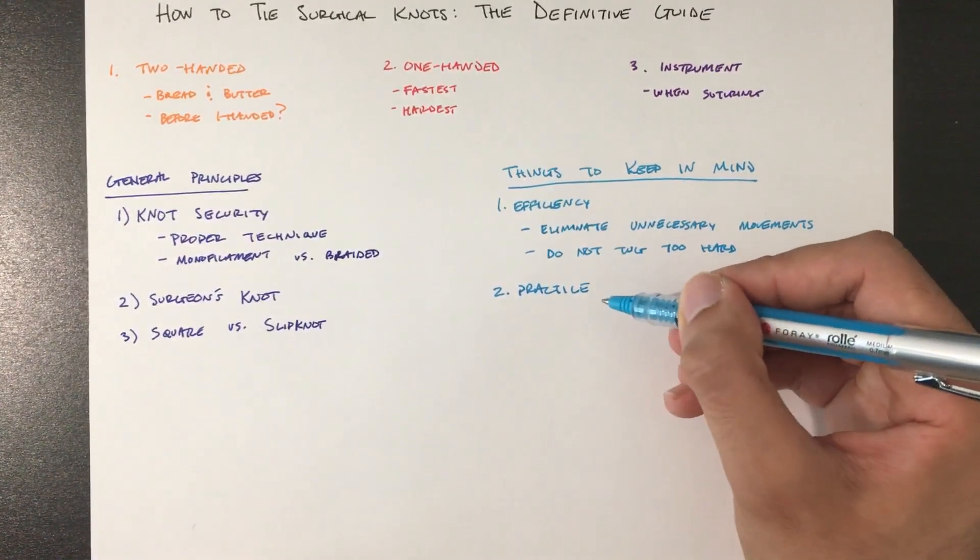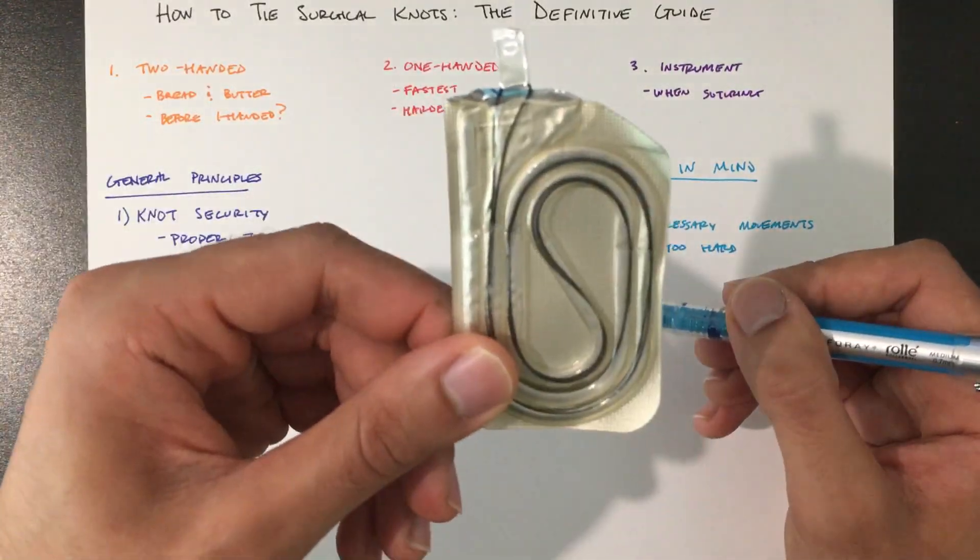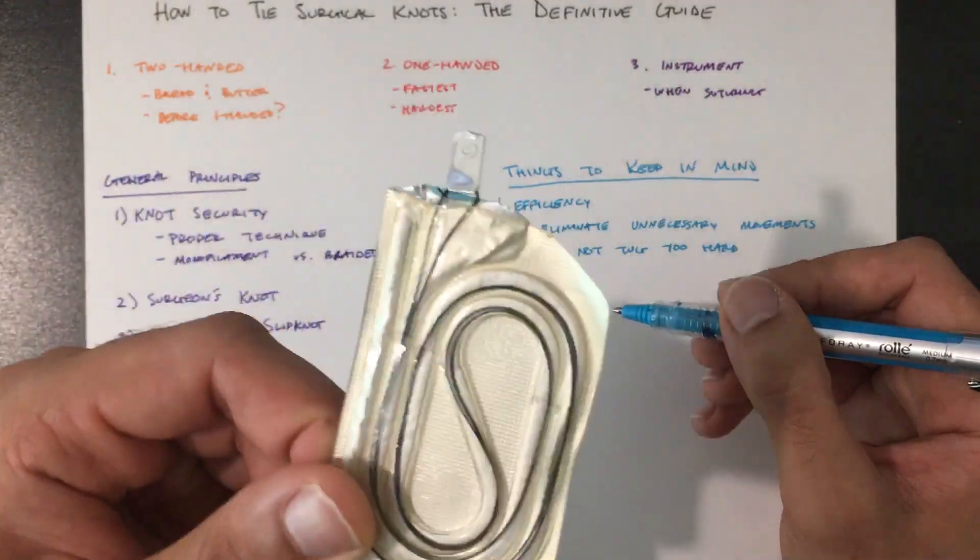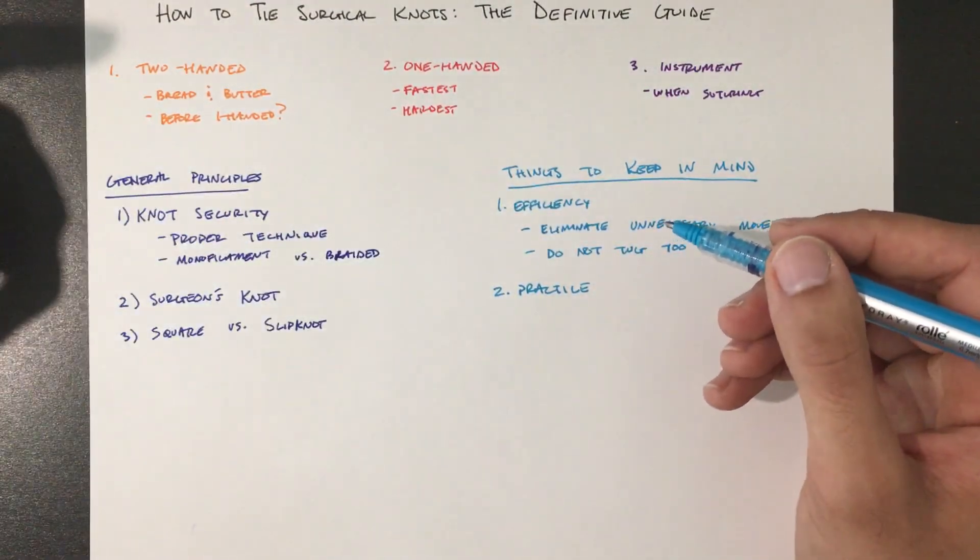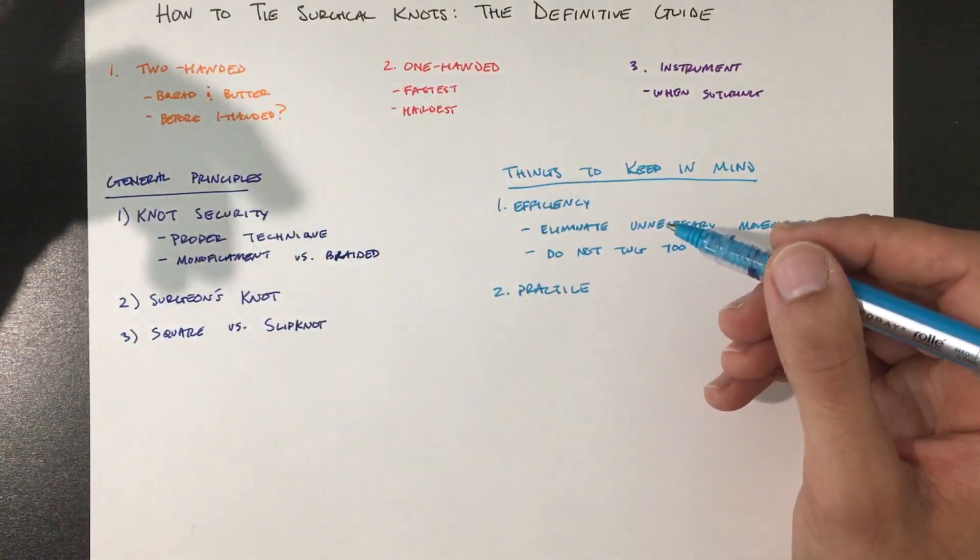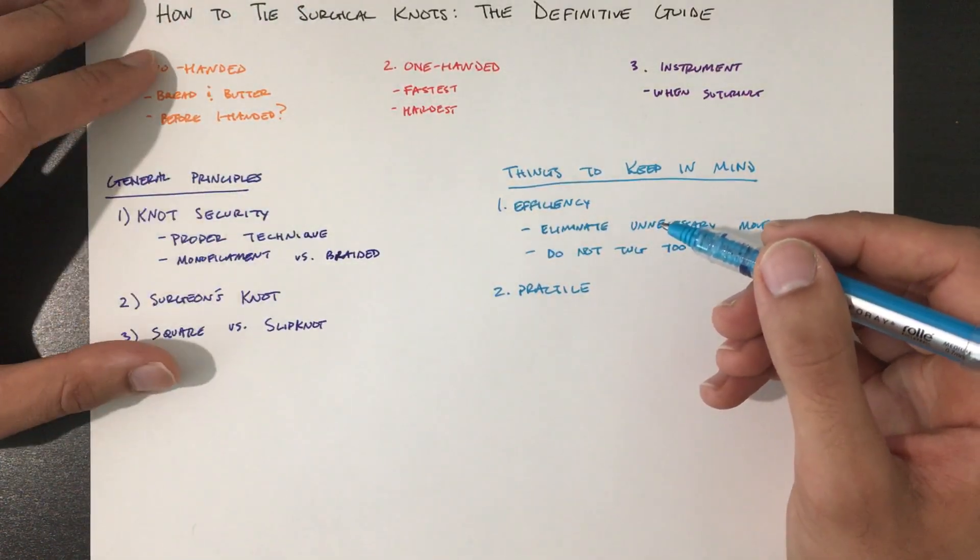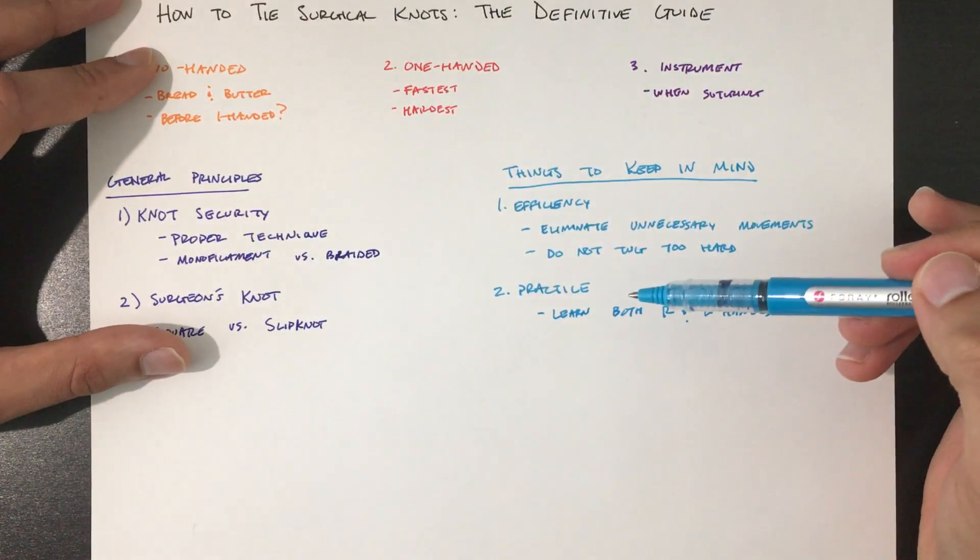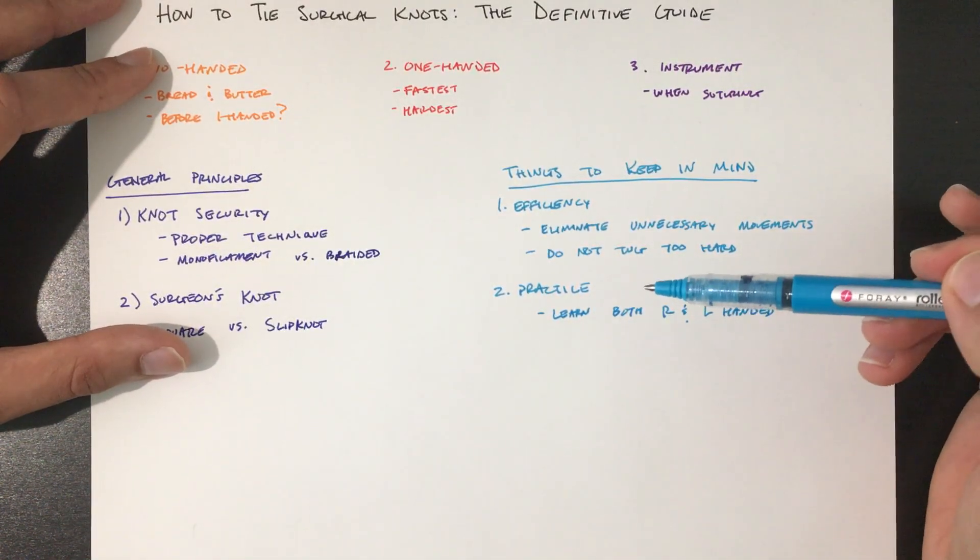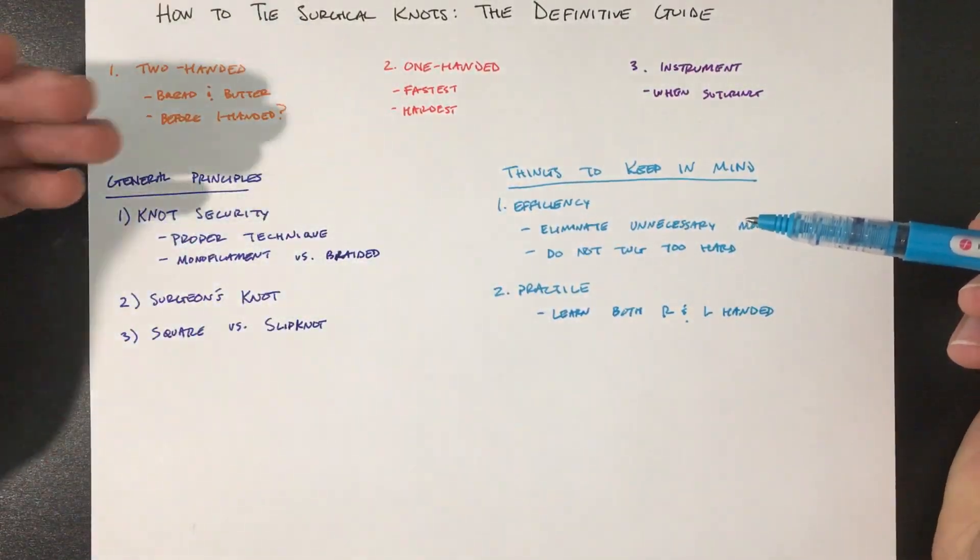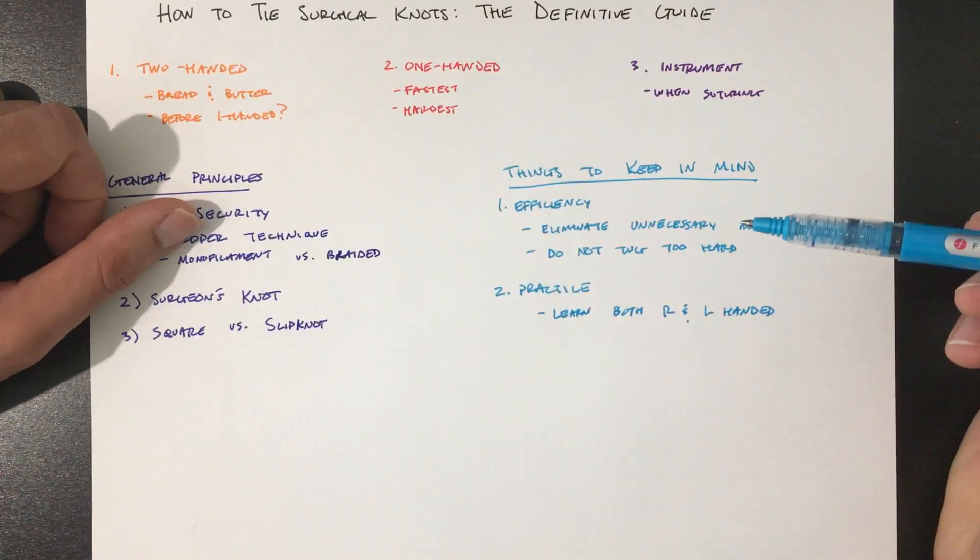Next, practice as much as you can. So what I would do is I would grab these ties from the OR, ask the nurse, see if they have any expired or any extra ones. And I would wrap it around my water bottle or a notebook and I would be tying either one-handed or two-handed while watching TV or listening to lectures. Do what works best for you. Also, once you're comfortable with one direction, teach yourself the other. Learn both right and left-handed techniques. Being able to tie with either side will serve you well in the OR.